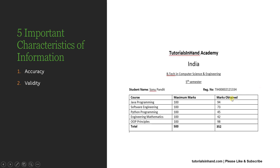The next characteristic is validity. The data that is coming should be valid and generated from a reliable source. For example, this data should be coming from some university — like a tutorials in hand academy — and there must be some URL where you can verify the details of this mark sheet. If you enter the registration number, you should be able to verify these marks. It should not be coming from any source which is not reliable and not valid, as it would be very difficult to trust whether the candidate really achieved those marks.